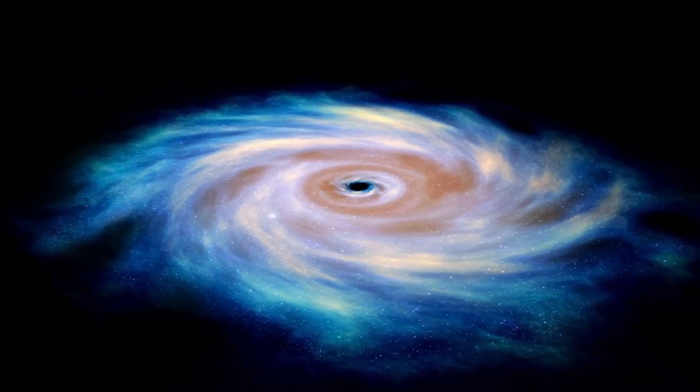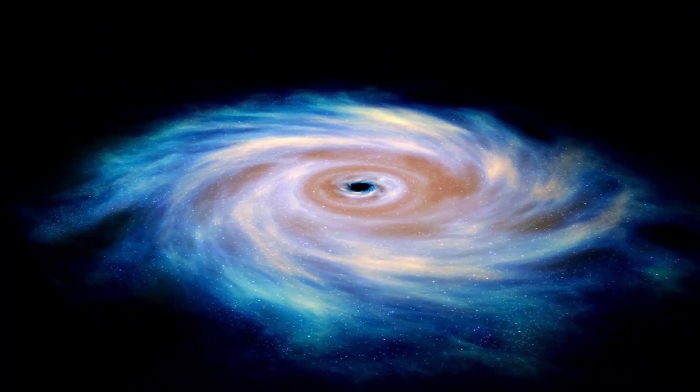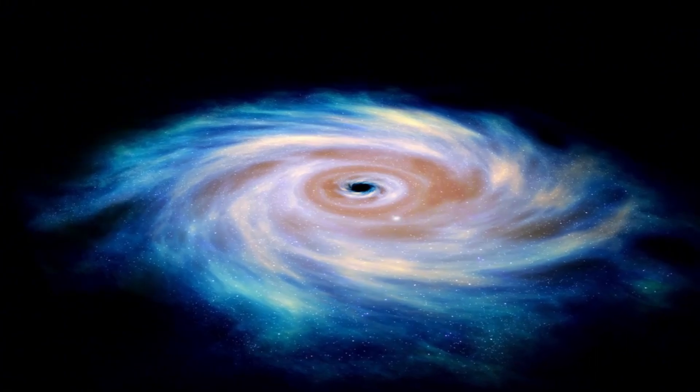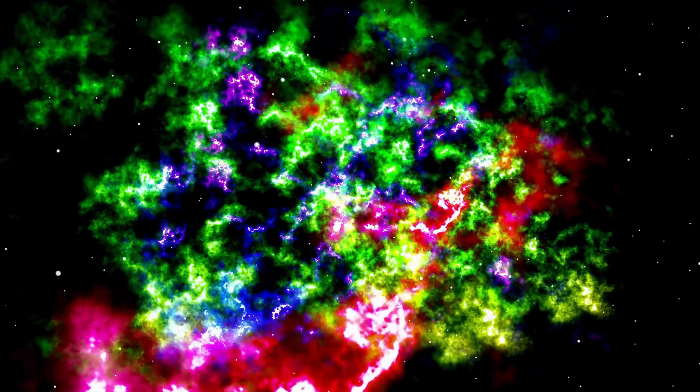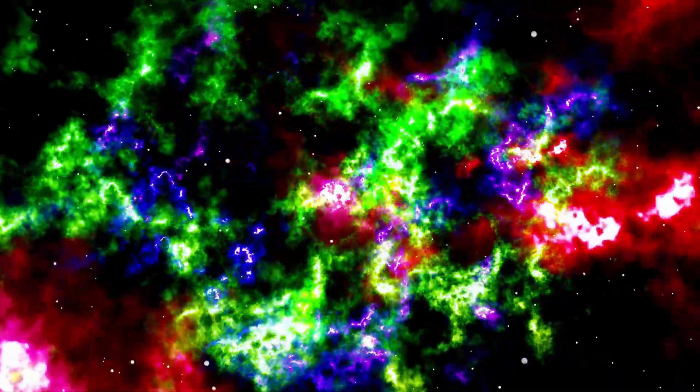The same is true for light. When a light source, like a distant star, approaches us, the light shifts to bluer tones. Conversely, when the light source moves away, the light shifts to redder tones. This phenomenon is called redshift.